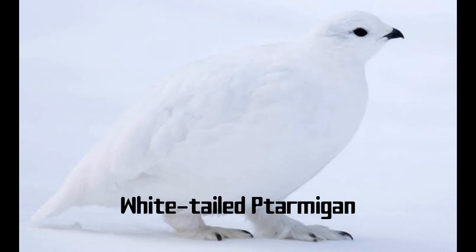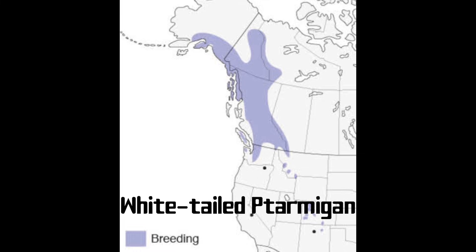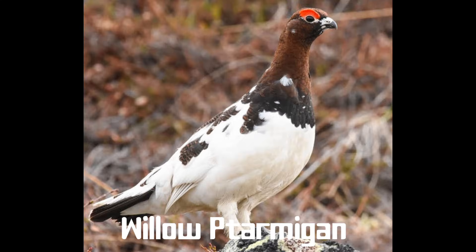The white-tailed ptarmigan are small, tubby grouse — snow white in the winter and twig brown in the summer. They're famous for being virtually invisible when they stand still against the windswept rocks. They nest above the timberline in the alpine tundra of the western mountains and are the only birds in North America that spend their entire life cycle at these very high elevations. Their feathered feet and dense plumage enable them to walk on top of snow and even roost inside snow banks. Similar to the other ptarmigans, this bird is a master of camouflage.